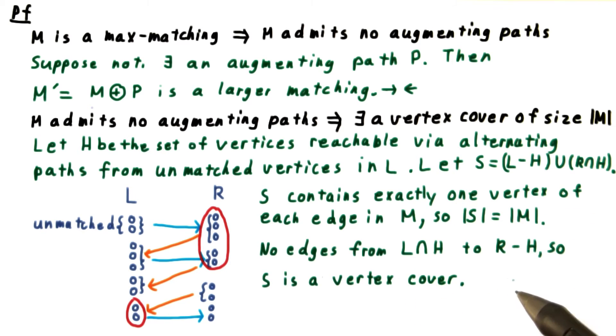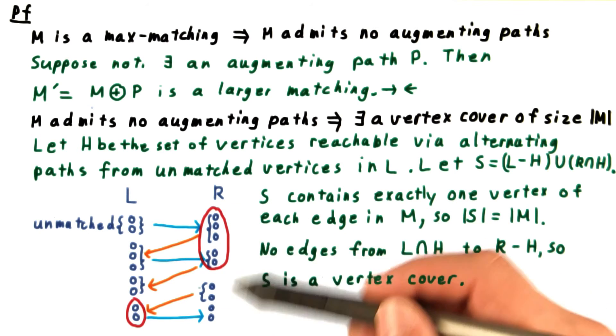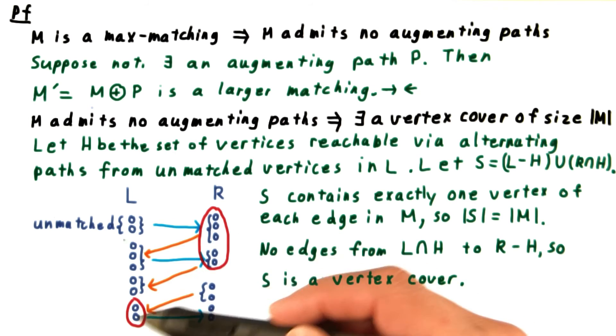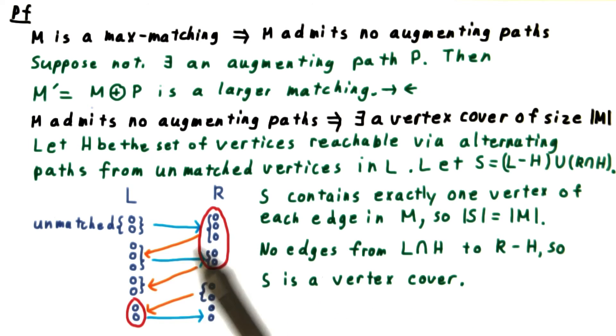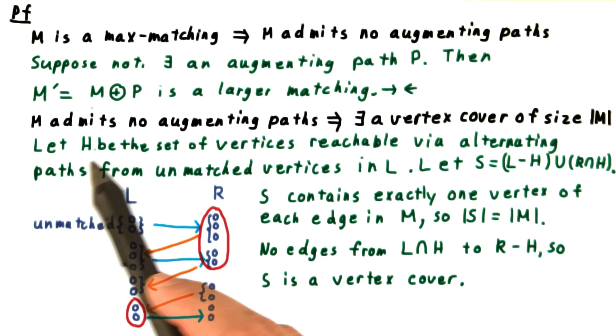Next, we need to convince ourselves that S is really a vertex cover. Remember that there are no edges internal to R or internal to L, so we don't need to worry about those. The part of S that is in R covers all the edges internal to our H set of vertices. And these over here in L, they cover all edges in the not H part of the graph.